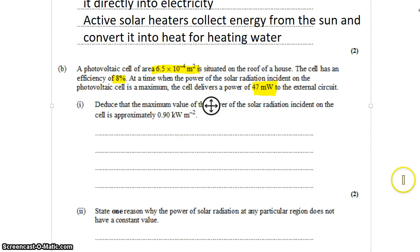Deduce that the maximum value of the power of the solar radiation incident on the cell is 0.9 kilowatts per square meter. So that's power per unit area. What's the power per unit area incident on the cell? We need to know how much power is landing on the cell. We're going to get that from the power that the cell is producing.